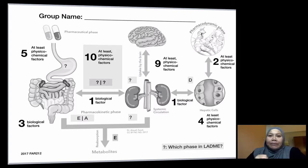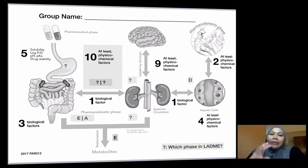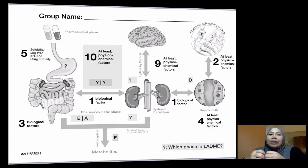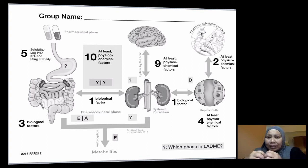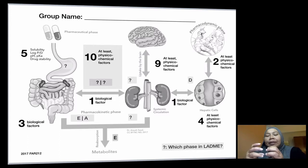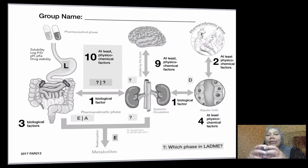When a drug is taken in by a patient, there are at least five factors that would affect the absorption of the drug. First, the drug will be disintegrated, so it needs to dissolve. Definitely solubility is important. Log P and log D, especially log P, will come into consideration. pH, pKa, and also drug stability as well. Remember that the pH of the stomach is very strong. In the stomach, a tablet or capsule would be liberated — that would be the first part.